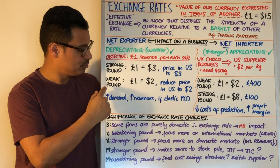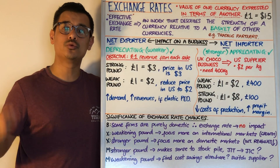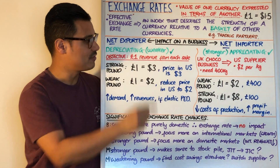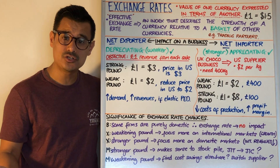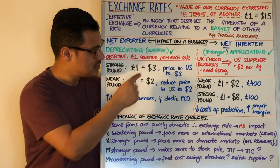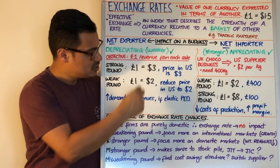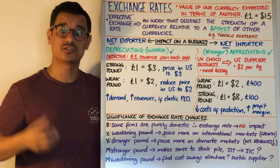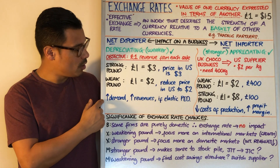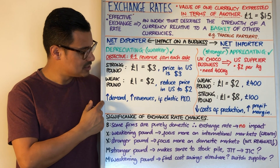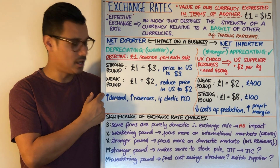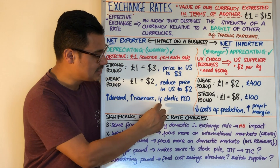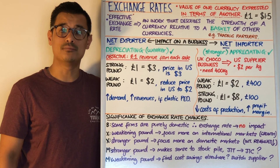Now the exchange rate changes — it depreciates to one pound equals two dollars. If that business wants to continue making its objective of one pound revenue from each sale, it can now reduce the price from three dollars to two dollars. A lower price is likely to mean a greater quantity demanded, which might lead to higher revenues — that's certainly going to be the case if they have an elastic price elasticity of demand.